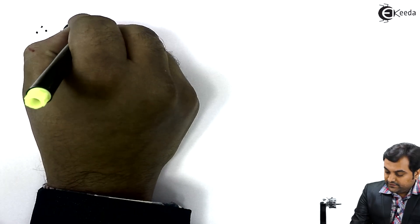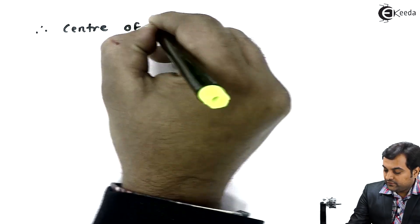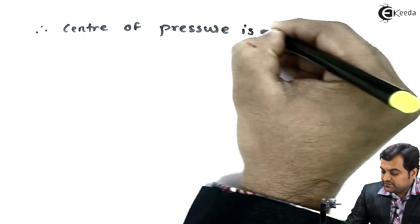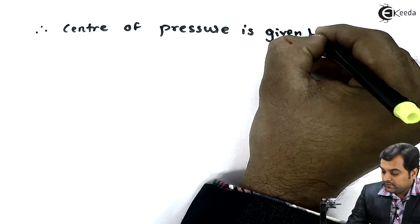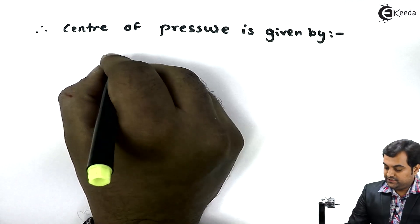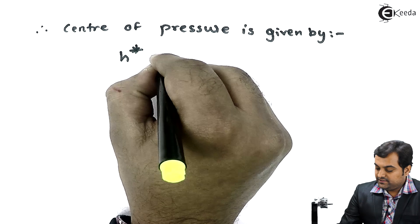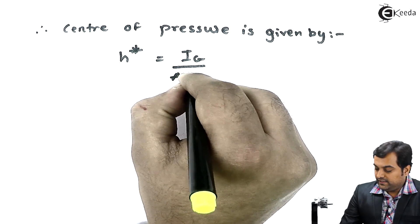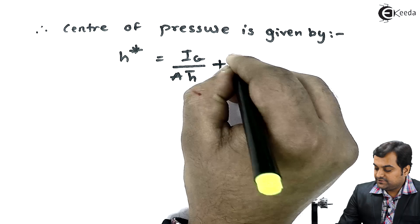therefore center of pressure is given by the formula: h star is equal to ig upon A H bar plus H bar.